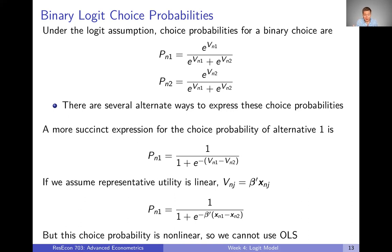If we make the common assumption of representative utility being linear — that those v's are just beta times x — then we get that the choice probability of alternative one is one divided by one plus the exponential of negative beta times the difference between x's. So there's a nice linear expression for representative utility buried inside, but it gets plugged into this exponential with division, so the whole choice probability is nonlinear. We can't use OLS to directly estimate a model that's nonlinear in the parameters.